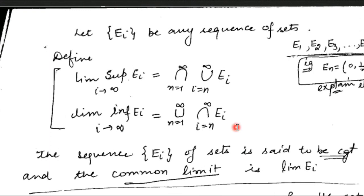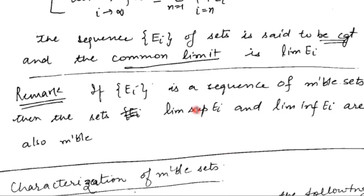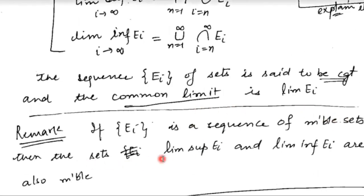Finally, if {Eᵢ} is a sequence of measurable sets, then the limit supremum and limit infimum of the sequence are also measurable sets, since they can be written as countable unions and intersections of the Eᵢ's. Therefore, lim sup Eᵢ and lim inf Eᵢ are measurable sets.